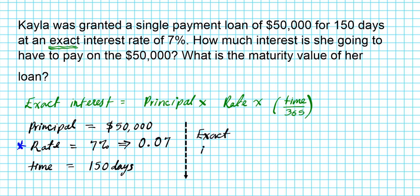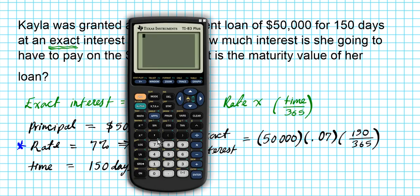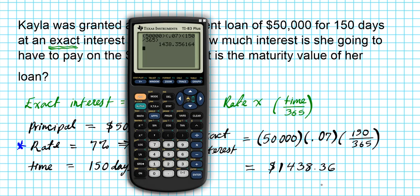So the exact interest is going to be the principal of $50,000, times the rate of 0.07, times the time of 150, divided by 365. Let's input this into our calculators: 50,000 × 0.07 × 150 ÷ 365. That gives us $1,438.36, rounding up.